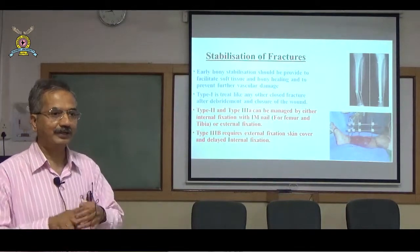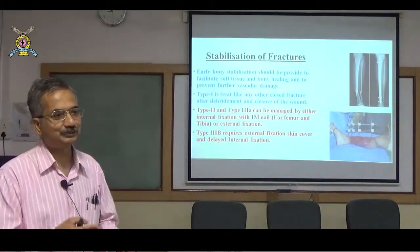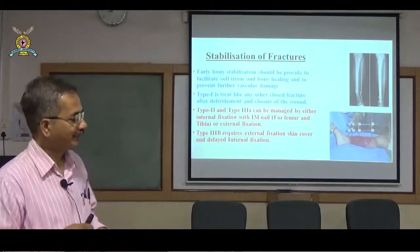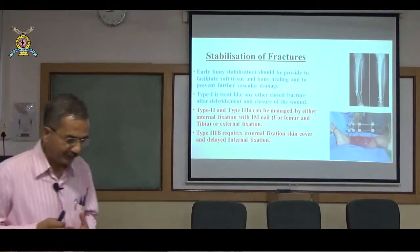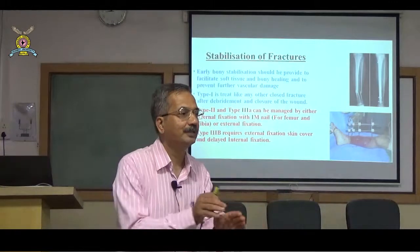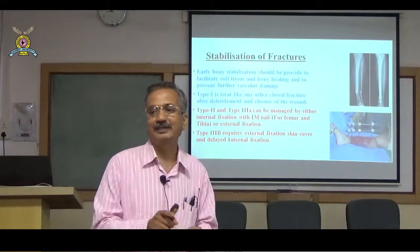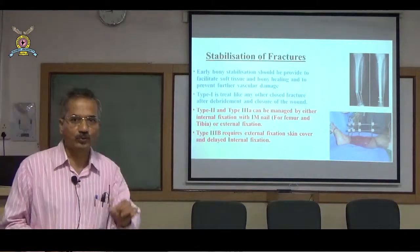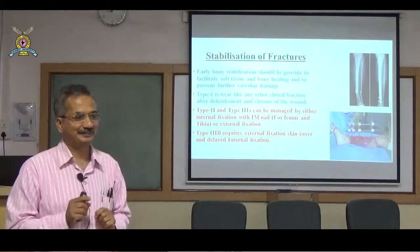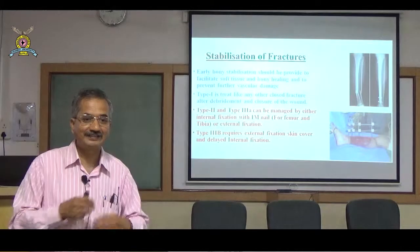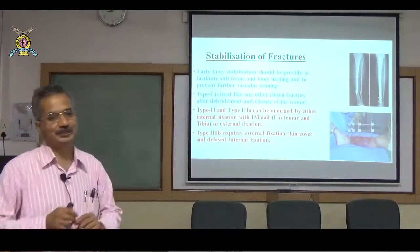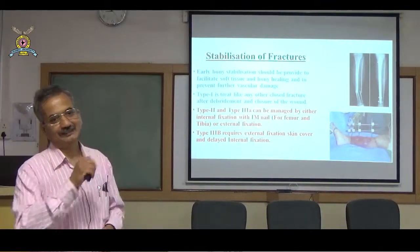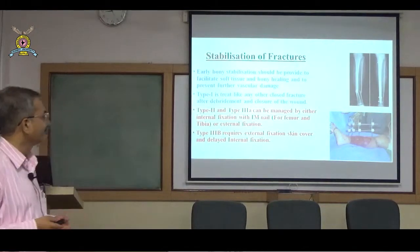For Type I, II, and IIIA fractures of tibia and femur, intramedullary nailing can be used. For Type IIIB (bone exposed, cannot be covered), use an external fixator — it stabilizes bone with minimal implant footprint and does not facilitate infection. Once flap coverage is achieved, convert to nailing or POP as appropriate.